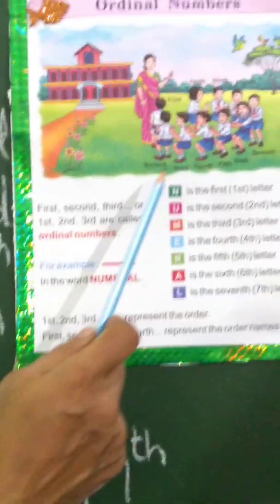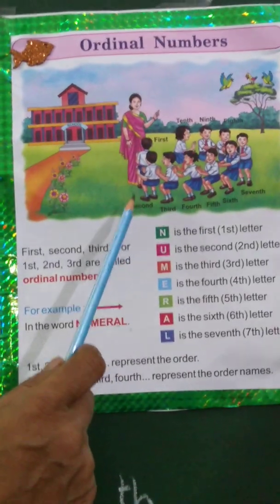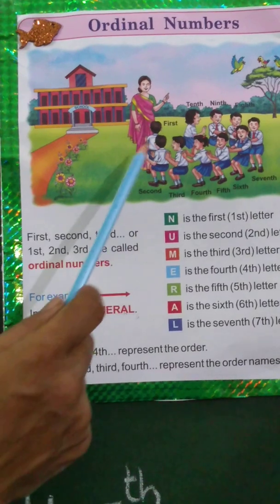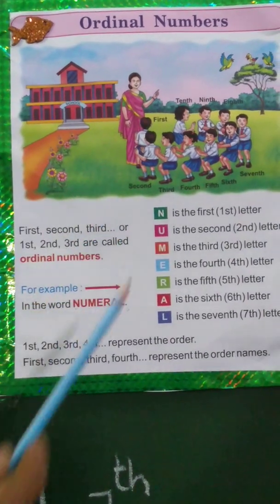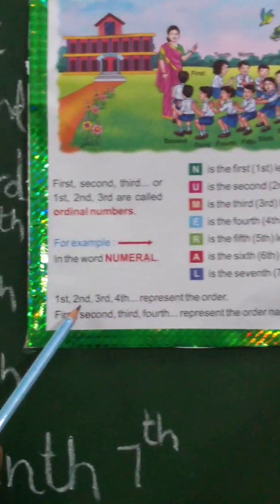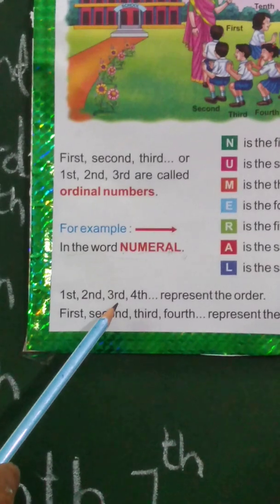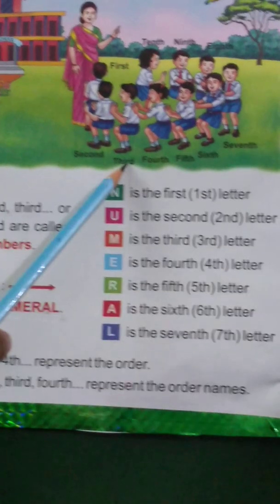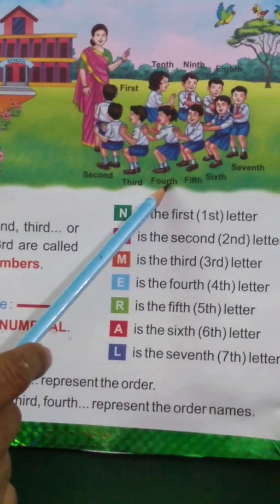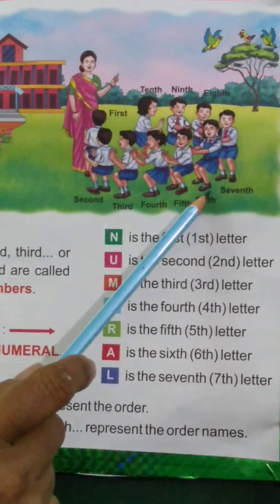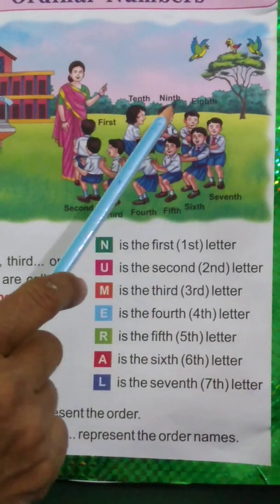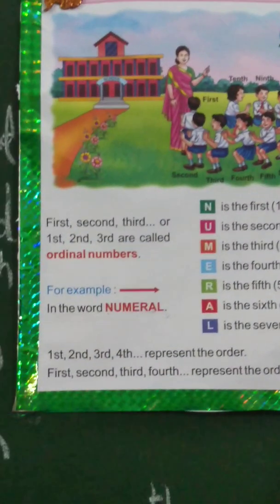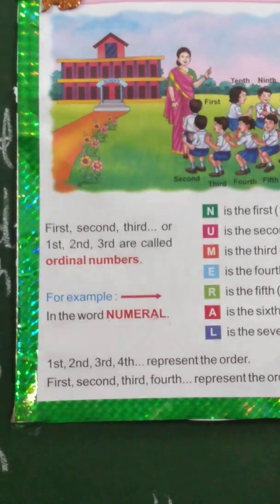You can see here that students are standing with their teacher. They are playing. First, second, third, fourth represent the order. First, second, third, fourth, fifth, sixth, seventh, eighth, ninth, tenth — all are standing in order.